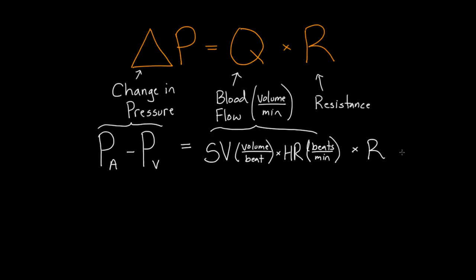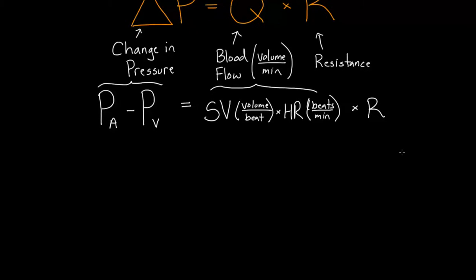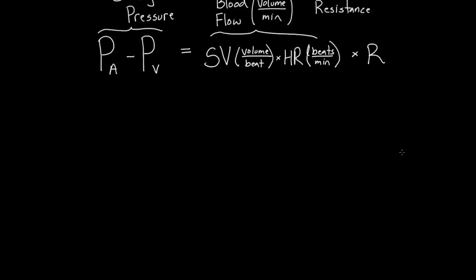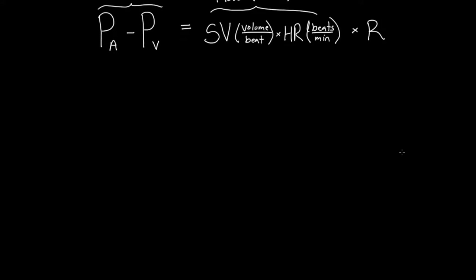And take all that and multiply it by resistance, and you get the change in pressure. So this is our formula, delta P equals Q times R, kind of spelled out for us. Now I'm going to make a little bit of space. And now what I want to do is go back to a pressure volume loop. And I want to show you exactly how it relates to this cool equation.